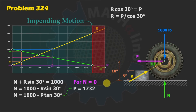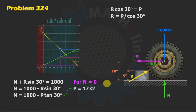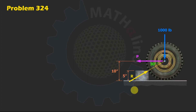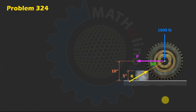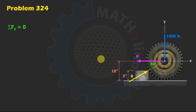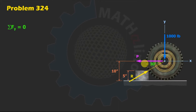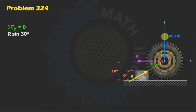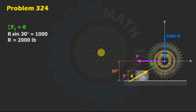At the impending state of motion, N equals zero, so we remove N from the free body diagram. Taking the center of the wheel as origin, summing forces in the Y direction: R sine 30 degrees equals 1,000 pounds, giving R equal to 2,000 pounds. This is the reaction at impending motion.